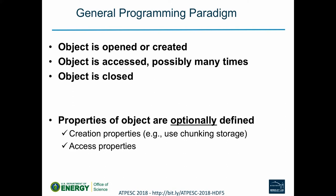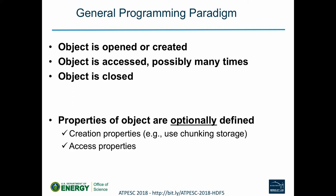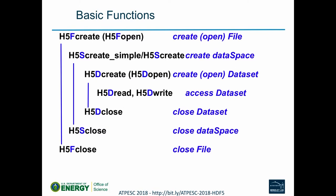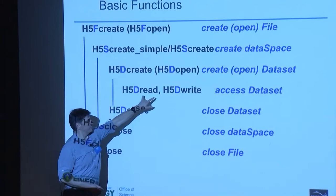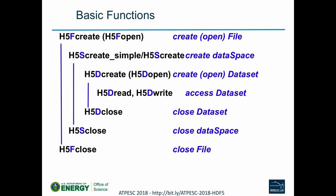Conceptually the programming model is very C-like: open the object, access it, close it — explicit initialization and explicit release with no garbage collection. If you want anything other than default behavior, define that with properties. A simple programming outline: create or open a file, create a data space (H5S_create), create or open a dataset, read or write, then close everything up. About seven calls will get data in and out of HDF5.